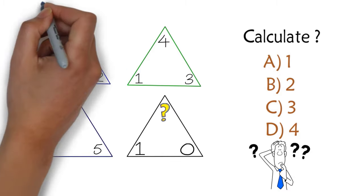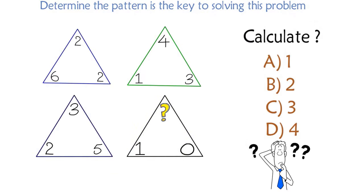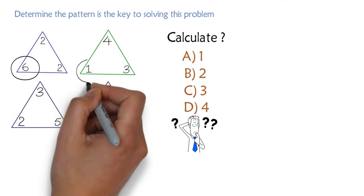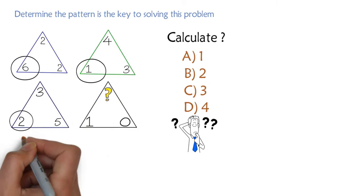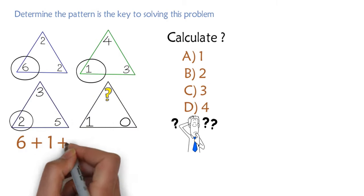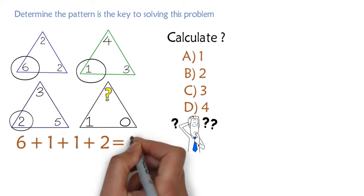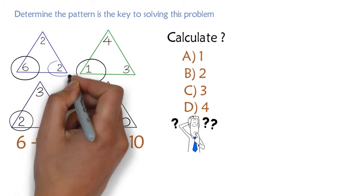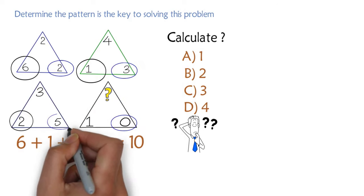Determining the pattern is the key to solving this challenge. For example, if you add up the numbers in the lower left corners — 6 plus 1 plus 1 plus 2 in all triangles — you will get the sum of 10. The same thing happens when you add up the numbers in the bottom right corners of the same triangles: 2 plus 3 plus 0 plus 5 also equals 10.